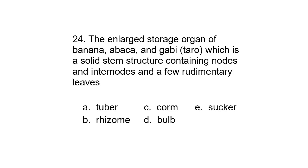Number 24: The enlarged storage organ of banana, abaca, and gabi, which is a solid stem structure containing nodes and internodes and a few rudimentary leaves — a) tuber, b) rhizome, c) corm, d) bulb, e) sucker. The answer is corm.